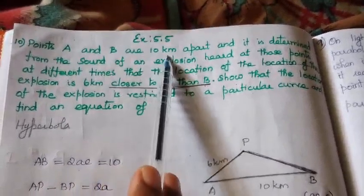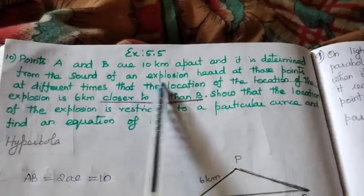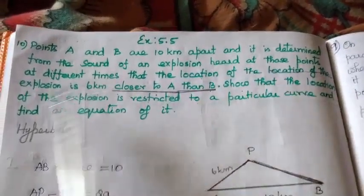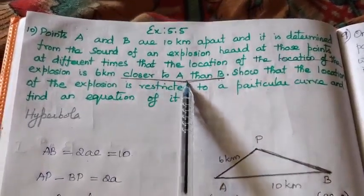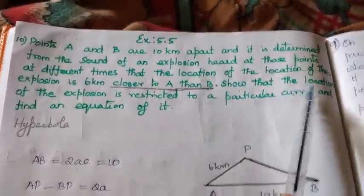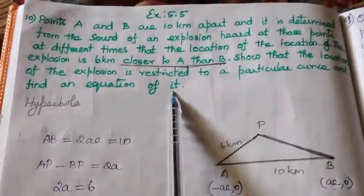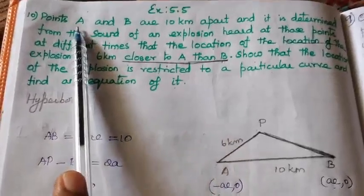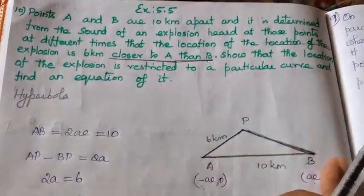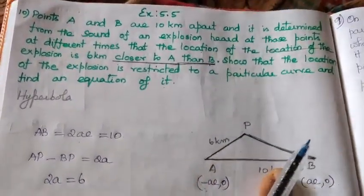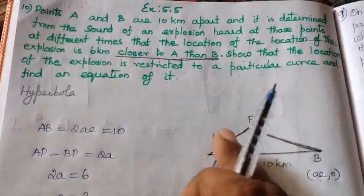Points A and B are 10 km apart, and it is determined from the sound of an explosion heard at those points at different times that the location of the explosion is 6 km closer to A than B. So the location of the explosion is restricted to a particular curve — find the equation of it. Given: points A and B are 10 km apart, and the explosion is 6 km closer to A than B.